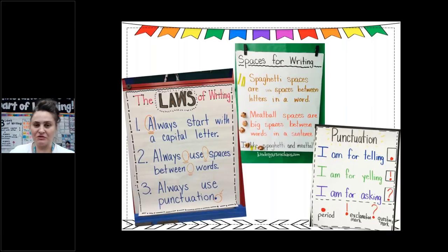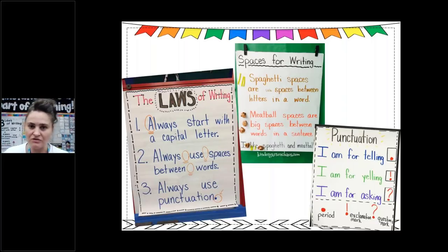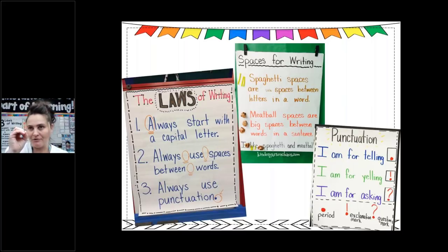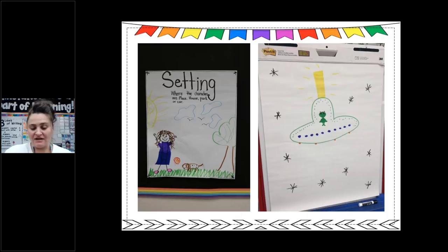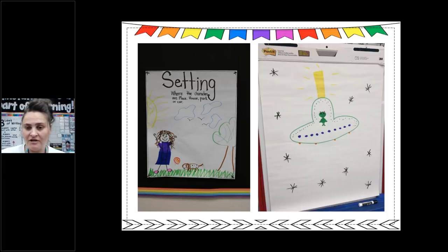My anchor charts kind of evolve. When I first did the 'laws of writing,' I had numbers one, two, and three. This year I added words in bold and some graphics. The 'spaces for writing' lesson is so fun to teach — I use spaghetti spaces. The yellow is actually pipe cleaners for spaghetti, and I used brown pom-poms as meatballs, or one year I crinkled brown paper to make meatballs. They never forgot that lesson.